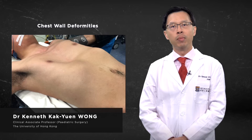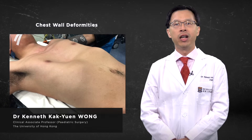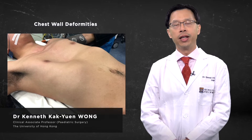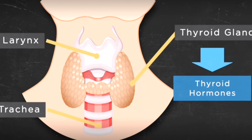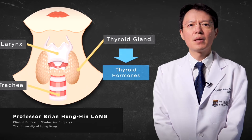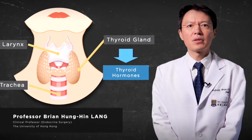Chest wall deformities are very common and can vary from mild to severe. High levels of viral hormones in the blood will speed up the metabolism.